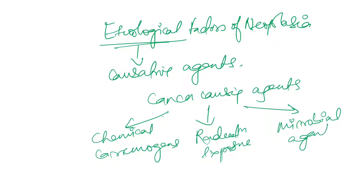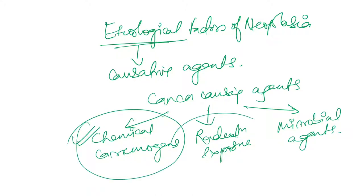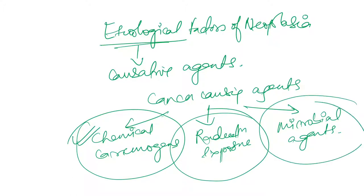So the causes of cancer: first, chemical carcinogens — due to some chemicals we might have cancer. Then due to radiation exposure, and due to microbial agents. In this video we'll be talking about chemical carcinogens and radiation exposure. In our next video we'll be talking about microbial agents — viruses, bacteria, and pterocytes.